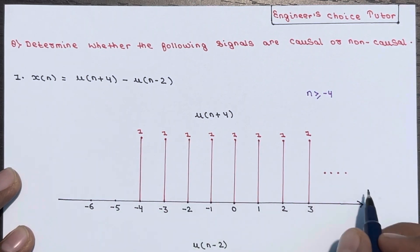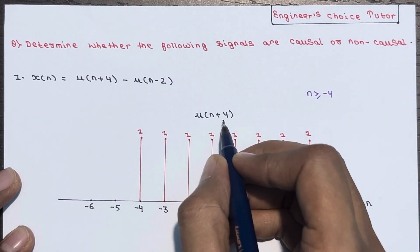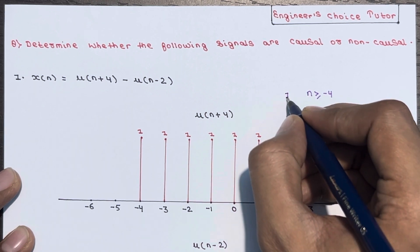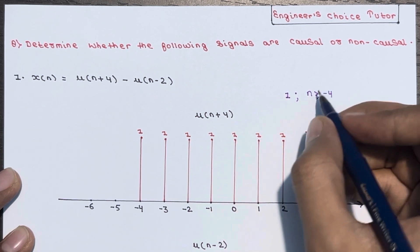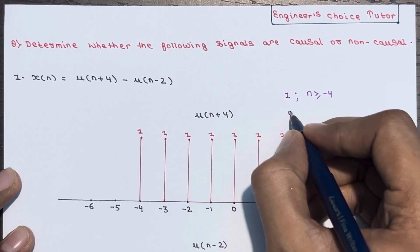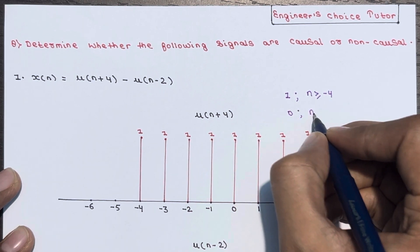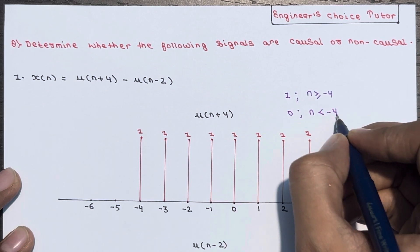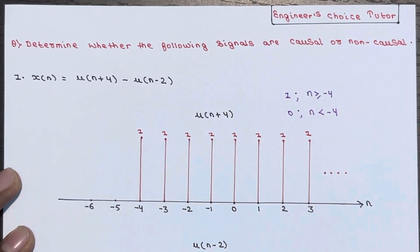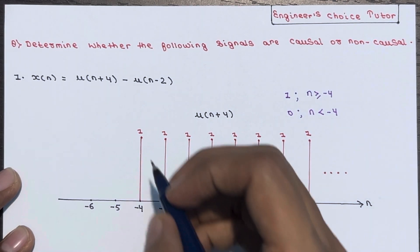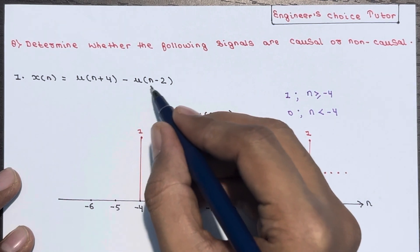So u of n plus 4 is basically 1 when n is greater than equal to minus 4, and 0 when n is smaller than minus 4. So this is the plot for u of n plus 4. Now let's look at the plot for u of n minus 2.